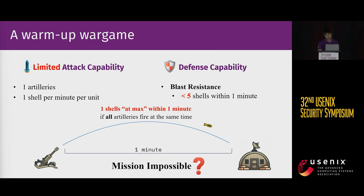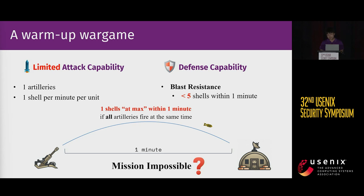Even if all the artillery units fire at max, we can only launch one shell in a minute. How can we improve the instant attack capability to destroy the bunker with many shells at once? Seems impossible, right? Please take a few moments to ponder this.